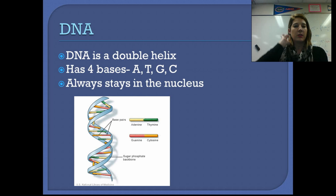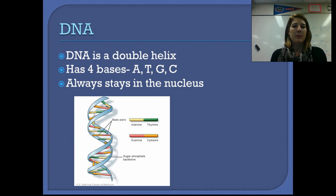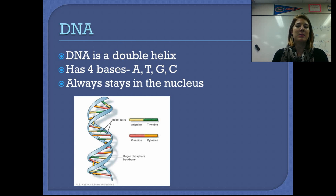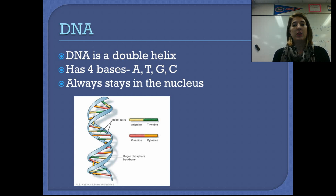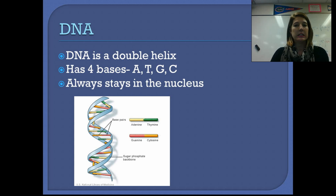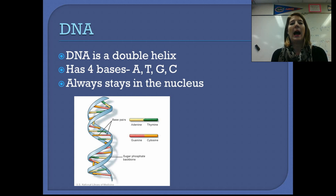To start off with, I just want to refresh you on DNA. DNA is a macromolecule. It is a double helix — that's what we call the twisted ladder structure of DNA. It has four bases: adenine, thymine, guanine, and cytosine, or as you more commonly see them, A, T, G, and C. DNA is always found in the nucleus of a cell and it never leaves the nucleus. DNA contains all of your genetic information and DNA codes for how to make a protein.